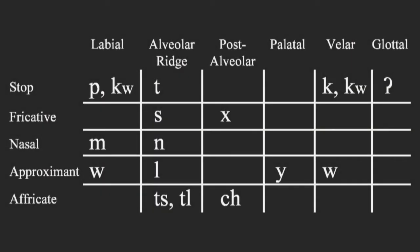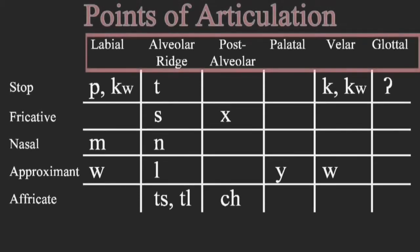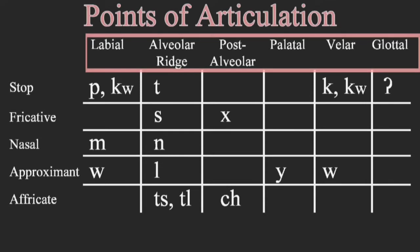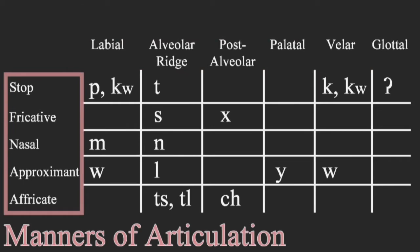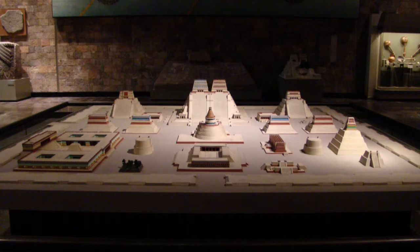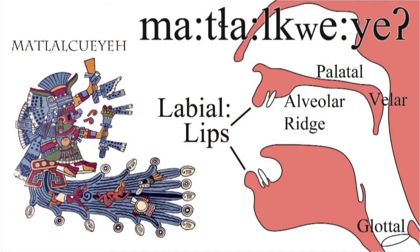The most effective way to learn the consonants of Nahuatl is by understanding two main parts of all consonants: the points of articulation and the manners of articulation. These mean where in the mouth you pronounce the sound and how you pronounce it. This episode will show how these two basic principles can get you started on pronouncing all the consonants in the language, specifically the Mexica dialect of Tenochtitlan. The second half will detail the TL sound, and then at the end a goddess's name pronounced with it.